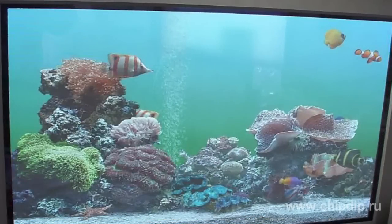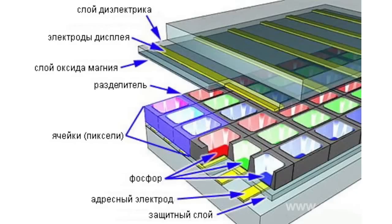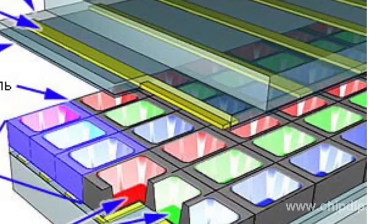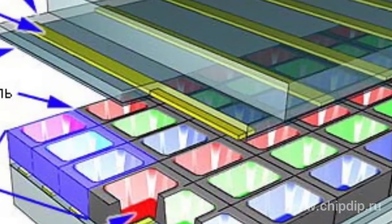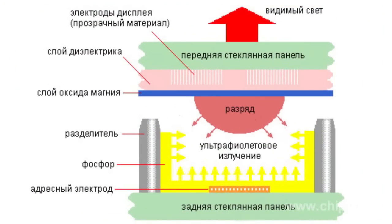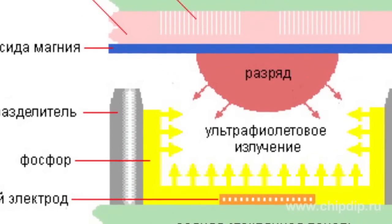Plasma display is a matrix of gas-filled cells put between two parallel glass surfaces. The gaseous medium is usually neon or xenon. Gas discharge occurs between the transparent electrode on the front side of the screen and the address electrode on its backside. Gas discharge causes ultraviolet radiation, which in turn initiates the visible luminescence of luminophore.